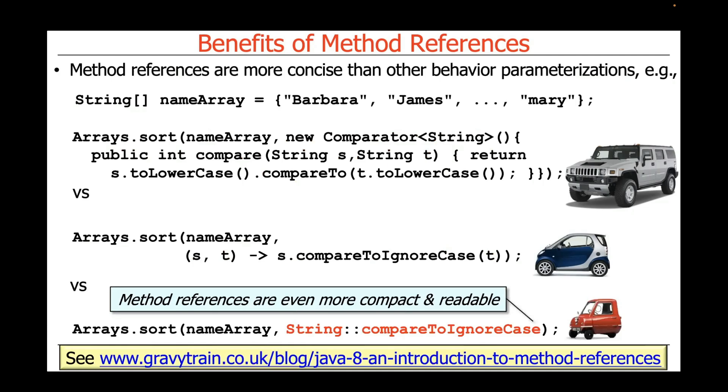Here, for instance, you can see we are going to sort the array by passing in the string colon colon compareToIgnoreCase method reference, which is very concise. Once again, to my mind, this looks quite a bit like C++ and the pointers to static member method syntax that you'll see in C++.